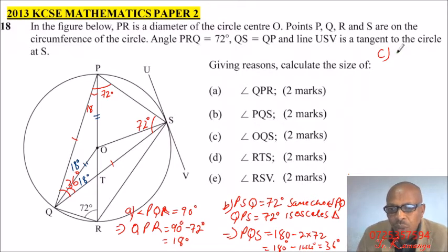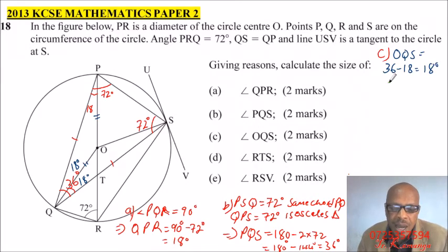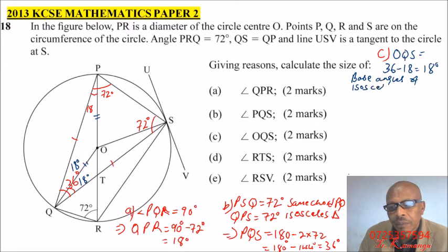So you say, OQS is equals to 36 minus 18 is equals to 18 degrees. You can say, base angles of isosceles triangle. So that is how you answer that. So there you also get two marks. We have given reason.